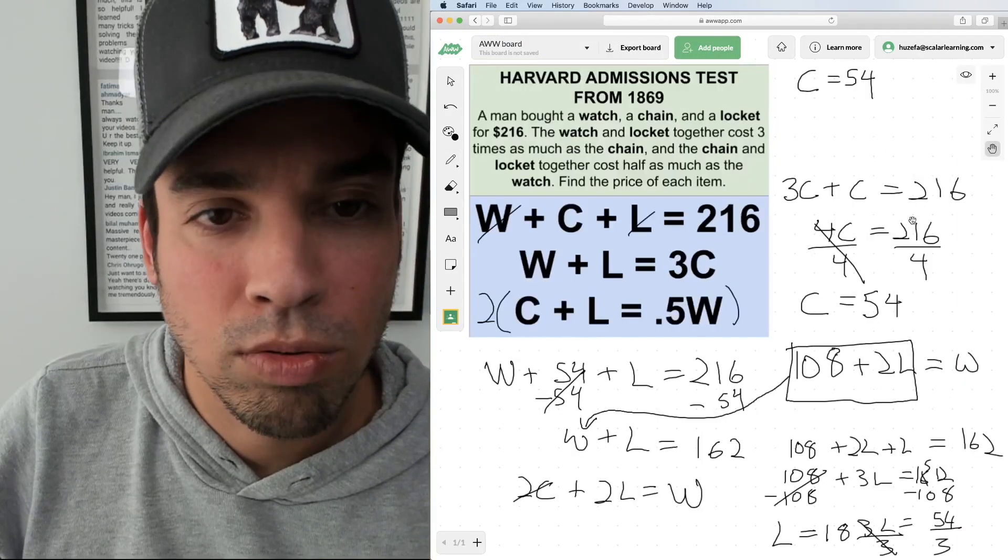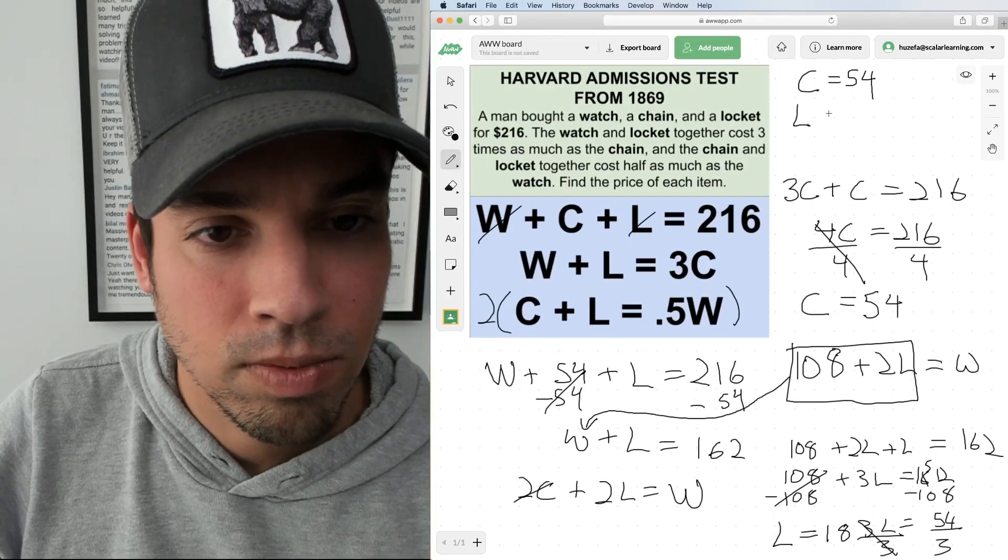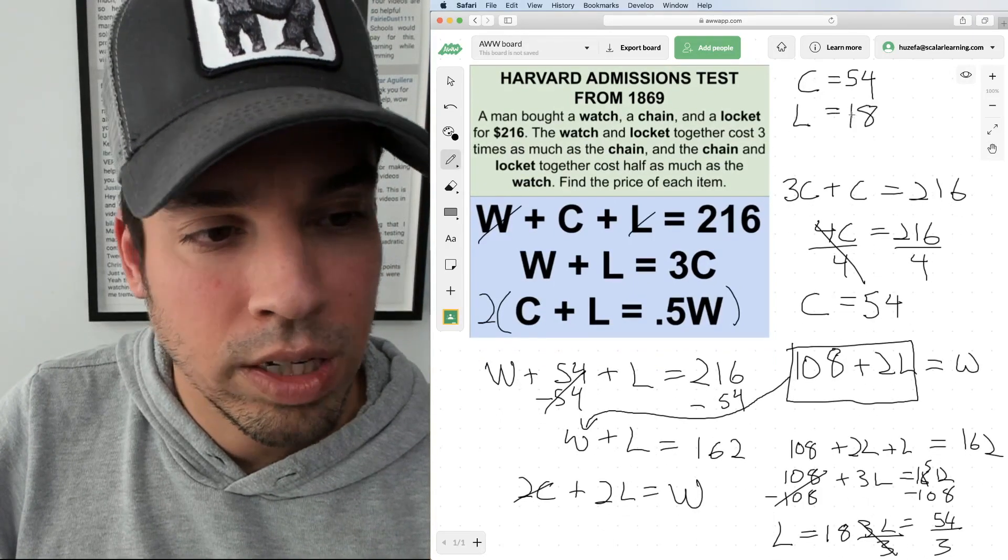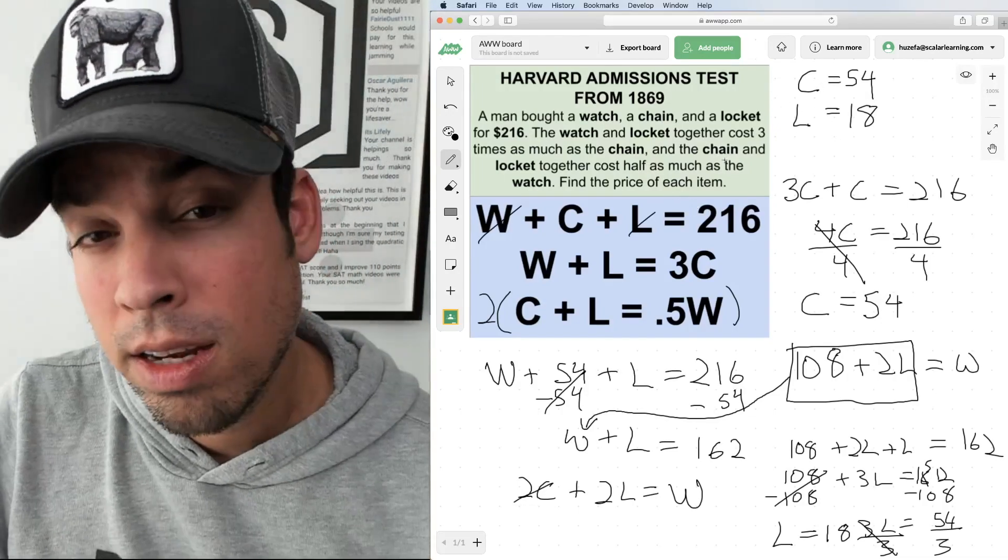So now we got that piece, locket equals 18 dollars. And now all we need to do is find the cost of the watch. We've got chain, locket, we need to find the cost of the watch.